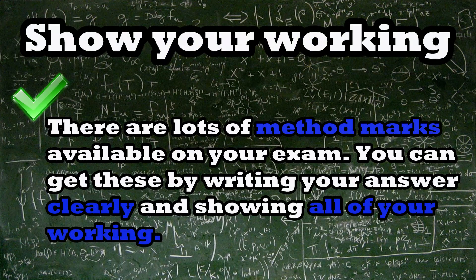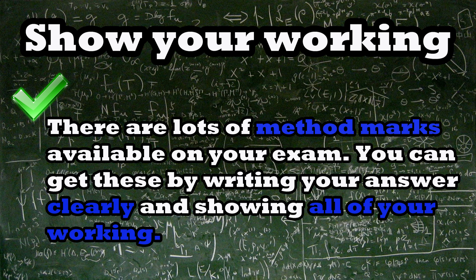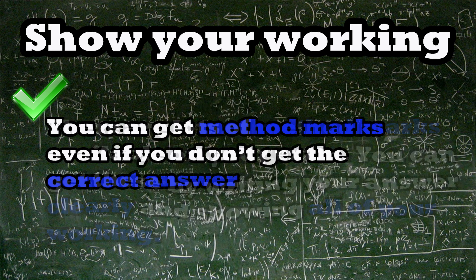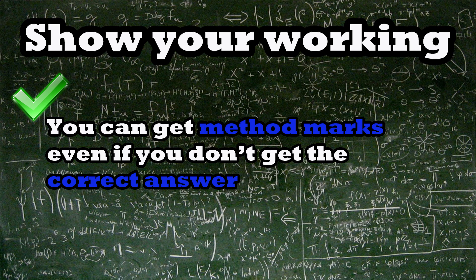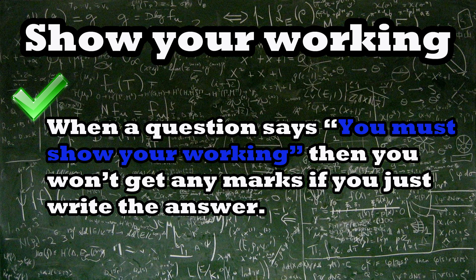Tip number 3: Show your working. There are lots of method marks available on your exam. You can get this by writing your answer clearly and showing all of your working. You can get method marks even if you don't get the correct answer. When a question says you must show your working, then you won't get any marks if you just write the answer.